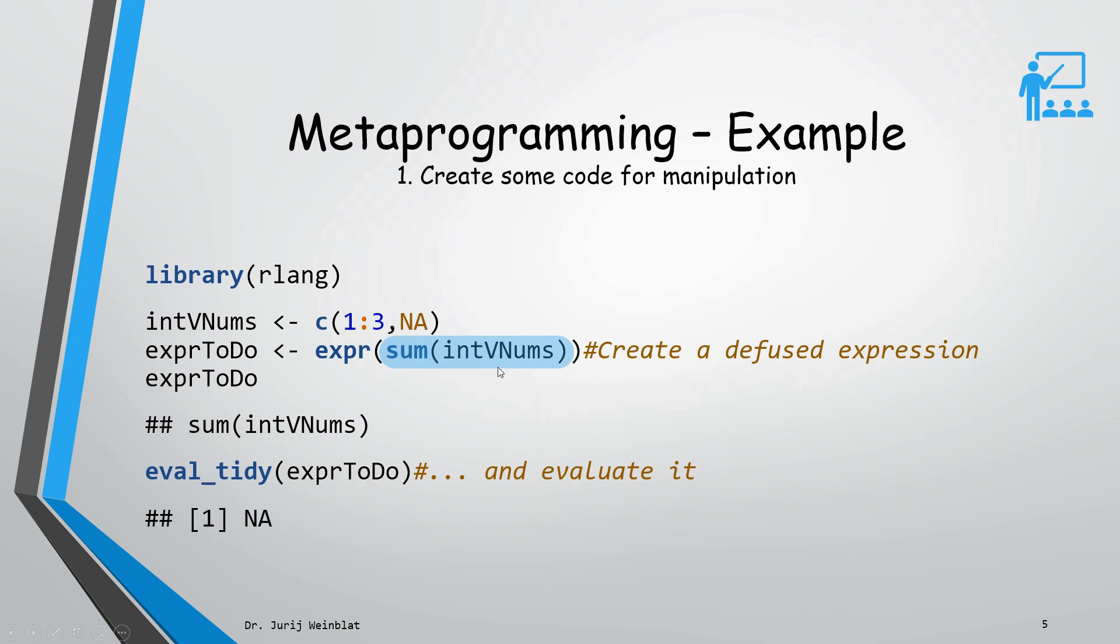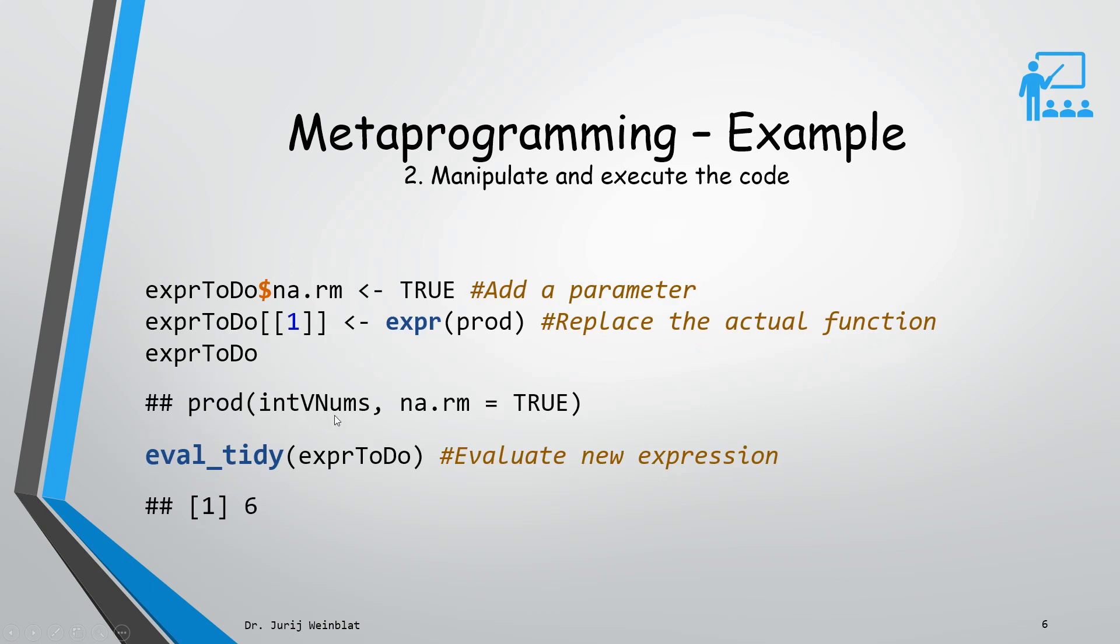What we're going to do is first add an additional attribute, na.rm, to make sure NA is thrown away. We say we don't want to calculate the sum, we actually want to calculate the product of these numbers. Let's print the modified expression. We see it's no longer sum, it's prod, and we've added the na.rm attribute set to true.